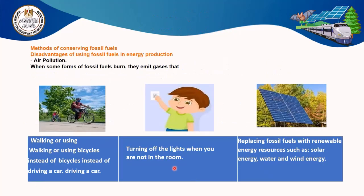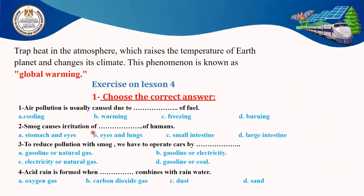Lessons to conserve fossil fuels. Disadvantages of using fossil fuel include air pollution: when fossil fuels burn, they emit gases that cause trapping of heat on the earth, causing global warming. So we should walk or use bicycles instead of driving cars, turn off lights when not in the room, and replace fossil fuels with renewable energy resources such as solar energy, water, or wind energy. Trapping heat in the atmosphere causes rising temperature of the earth and changes the climate — this phenomenon is known as global warming.